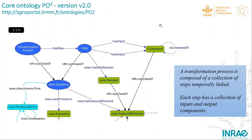In the upper-left part of the core ontology, a transformation process is composed of a collection of steps which are temporally linked, and for each step there is a collection of input and output components.